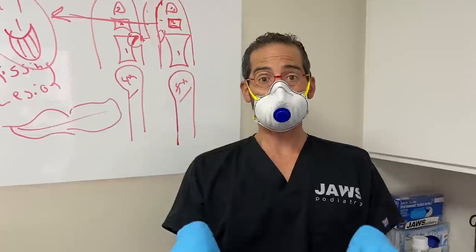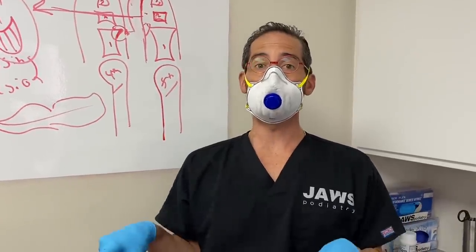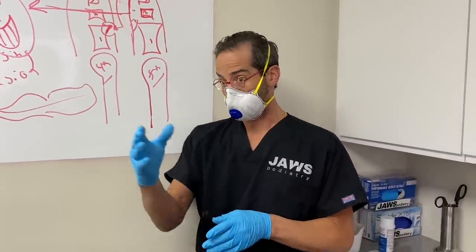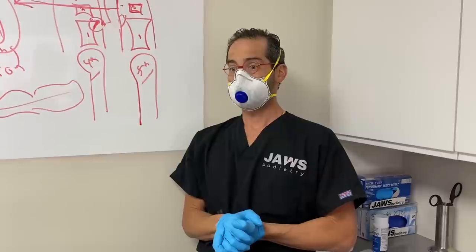Intractable interdigital porokeratosis — also known as an interdigital seeded corn — as a result of a bone spur. Extremely common. There are solutions out there, and we can fix this.